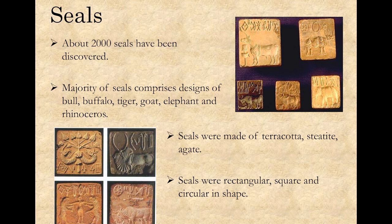The next source we are going to study is seals. About 2,000 seals were discovered in excavations at Harappan sites. The seals were made of clay like terracotta and stones like agate. They were of various sizes and shapes — rectangular, square, and circular. You can also see in the pictures that designs on seals comprise animals like bull, buffalo, tiger, goat, elephant, and rhinoceros.